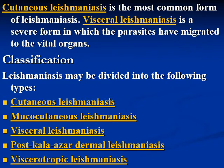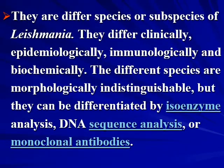The new classification of leishmaniasis includes: cutaneous leishmaniasis, mucocutaneous leishmaniasis, visceral leishmaniasis, post-kala-azar dermal leishmaniasis, and viscerotropic leishmaniasis. These species of Leishmania differ clinically, epidemiologically, immunologically, and biochemically, but are morphologically identical. We can differentiate them by isoenzyme analysis, DNA sequence analysis, and monoclonal antibodies.